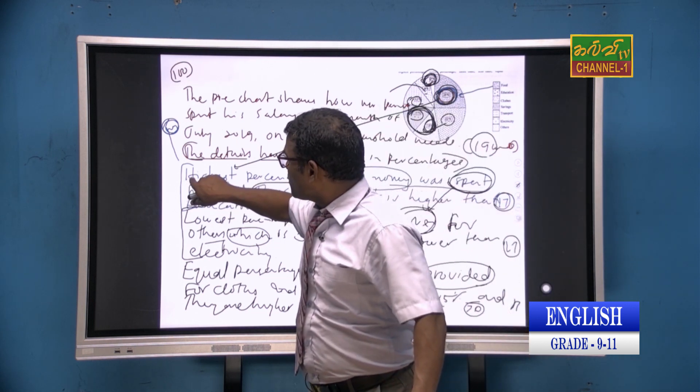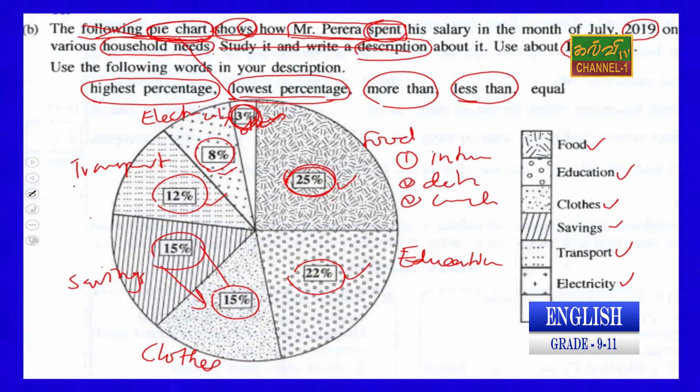You have to understand this pie chart from the question, and you have to write the answers from the introduction part or the question. Then you have to understand what is the highest value or percentage, what is the lowest value, and what is the equal value. Then, using those words, finally you write according to the chart. You can go accordingly, according to the pie chart.